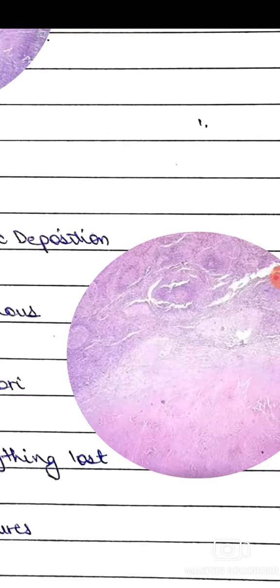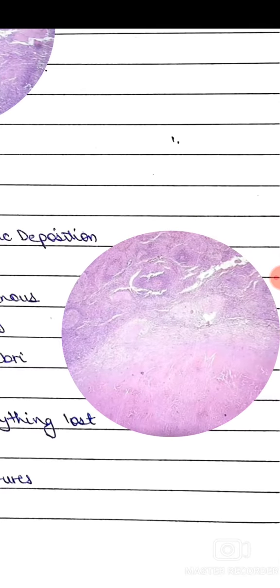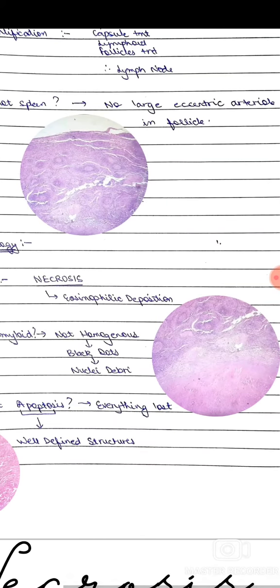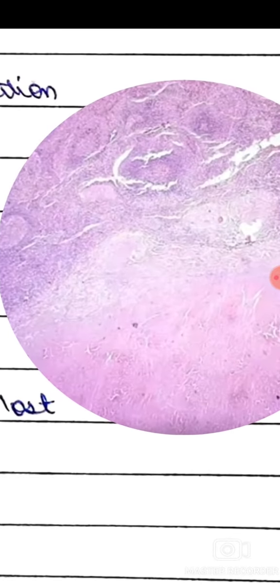We see a pinkish colored area where we can see eosinophilic deposition. This is an area of necrosis.